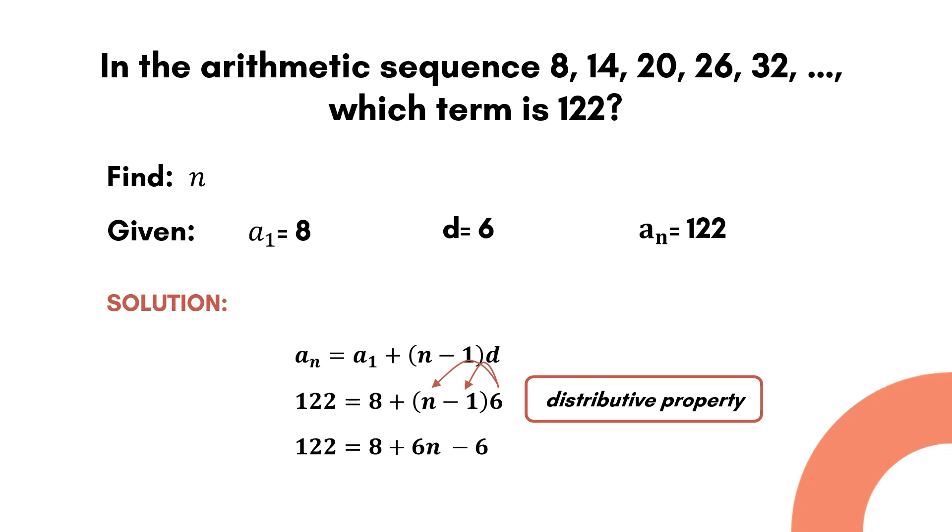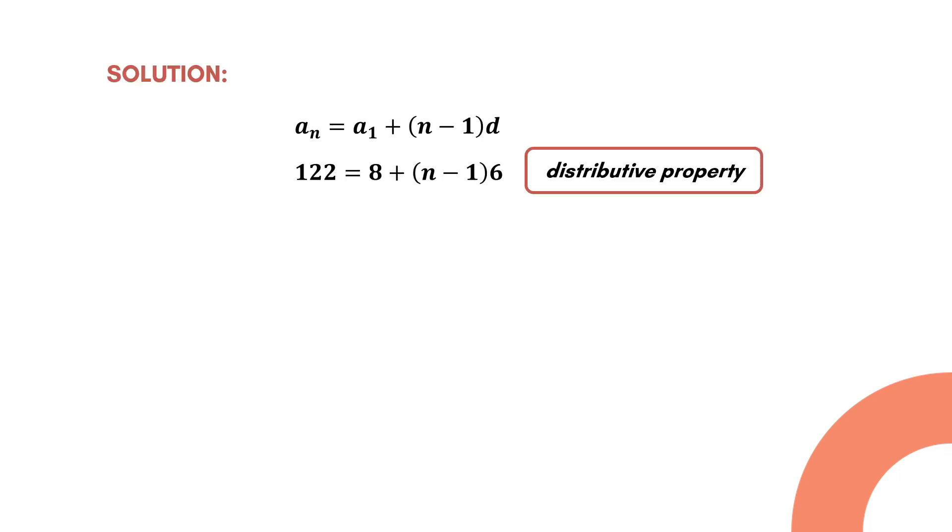Let's rewrite this. Next, we combine like terms by transposing these whole numbers to the left side of the equation. So, we have 122 plus 6 minus 8 is equal to 6n. Then we simplify this one. We have 120 is equal to 6n.